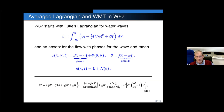Whitham starts with Luke's Lagrangian for water waves, and then he introduces an ansatz for the flow with phases for the wave and mean. Taking the velocity potential to be this phase plus the velocity potential for the wave, where K is a wave number, omega is a frequency, beta is like a mean flow, gamma is what Whitham calls a pseudo frequency, and B is a mean depth. If you just take this ansatz and plug it into L, you get equation 25, which is from his paper.